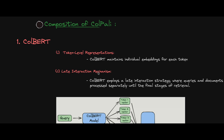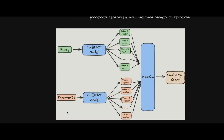The late interaction mechanism is a strategy which takes your query and the document and pre-processes them separately until the final stage of retrieval. The ColBERT model takes your document as well as the query, tokenizes each token, and creates a vector representation for each token.